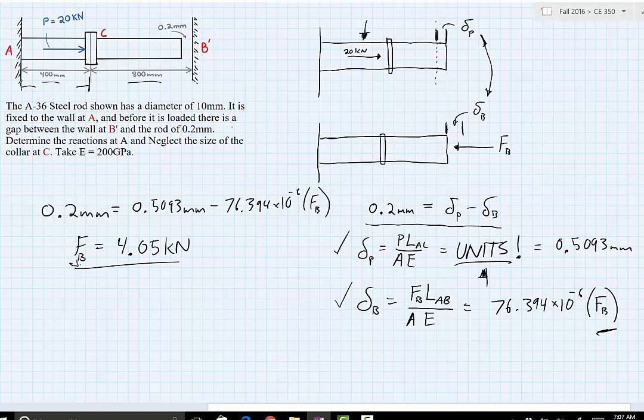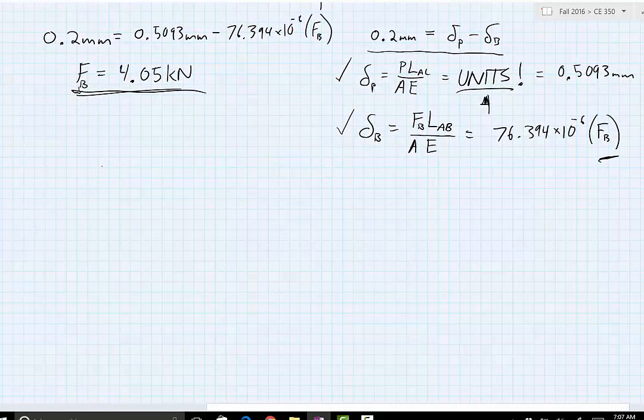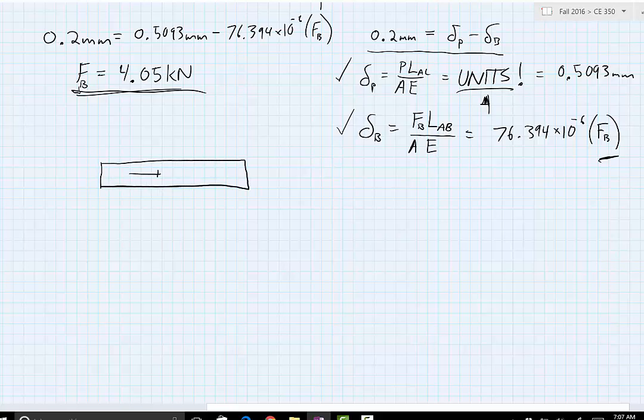So our force of B is now in kilonewtons. Now we know two forces, so we can draw another diagram. We know a P value, we now know F sub B. Now we need to find F sub A.